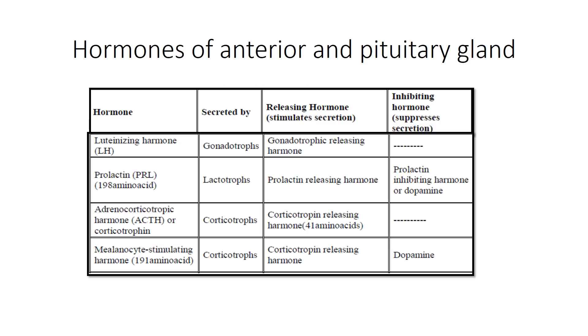In this whole video we will be talking about the various hormones — hormones of the anterior pituitary gland. The most important ones are the luteinizing hormone, the prolactin hormone, ACTH, and MSH.